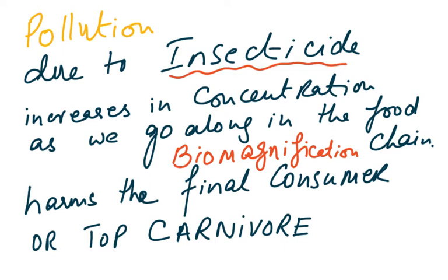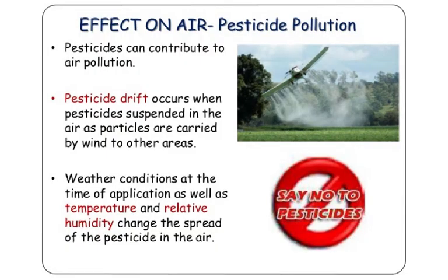Pollution due to insecticides is harmful to the environment and to aquatic and marine life. Pesticides — which include herbicides and insecticides — also contribute to air pollution through pesticide drift, which occurs when pesticides suspended in the air as particles are carried by wind to other areas. Weather conditions, temperature, and relative humidity all affect the spread of pesticide in the air.